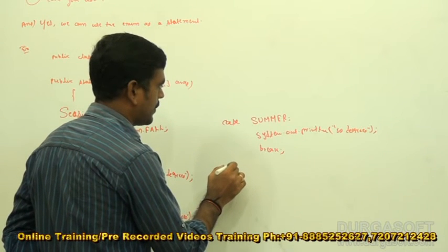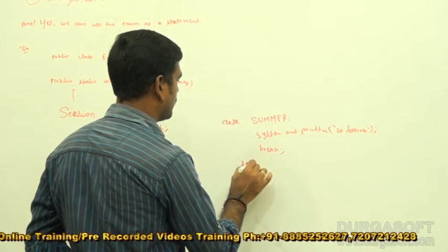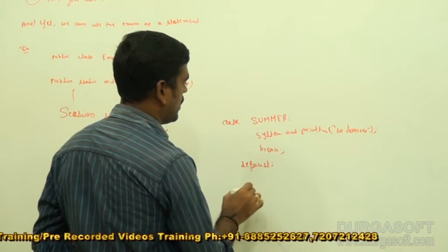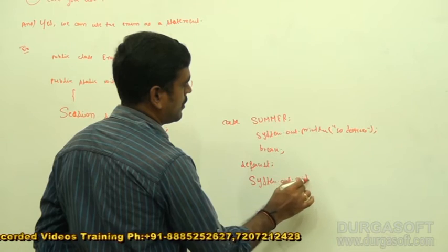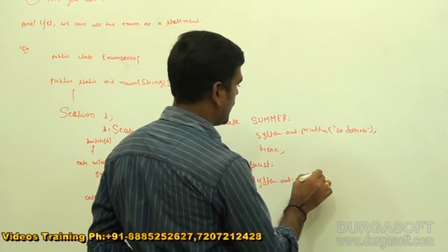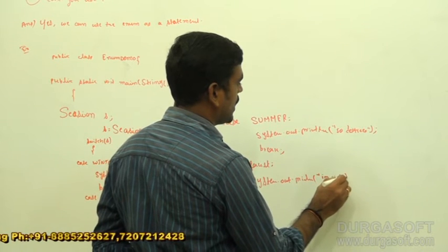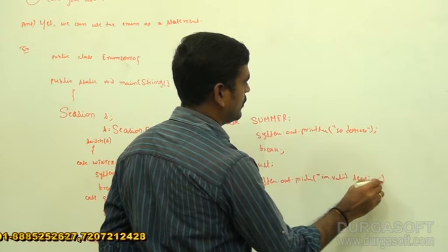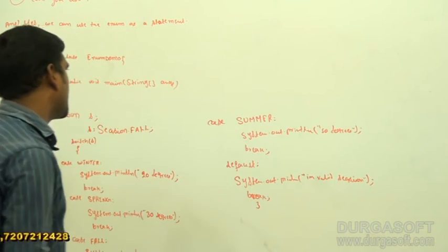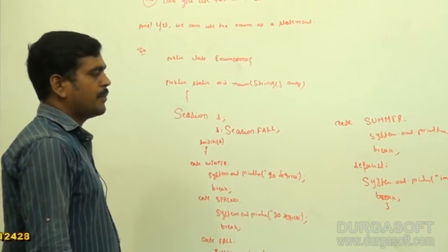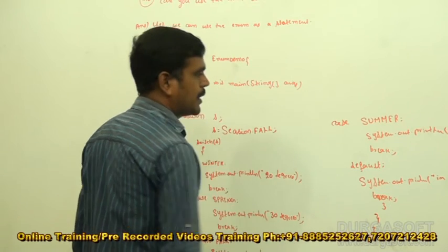Now here, we don't need to take another case. We can directly take default. Colon. Then System.out.println — invalid season. Then break. If any condition is not satisfied, the default block is going to be executed. Then close the switch, close the main, close the class.